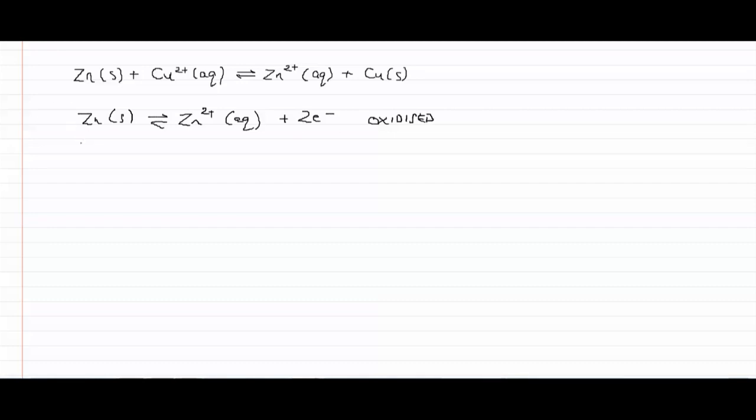And then the other half-reaction involves copper. And in this case, the copper picks up two electrons to become copper like that. So that's becoming reduced.